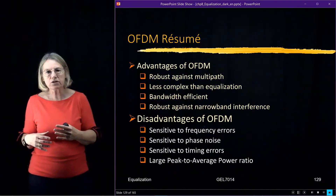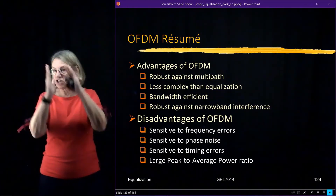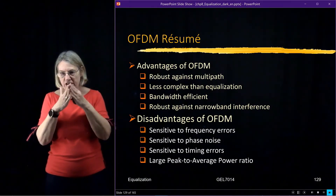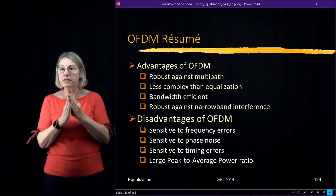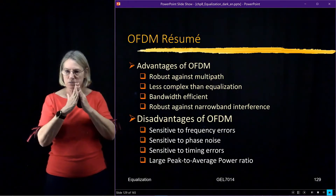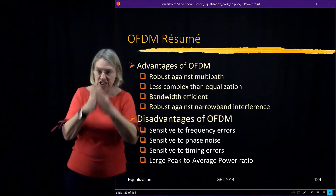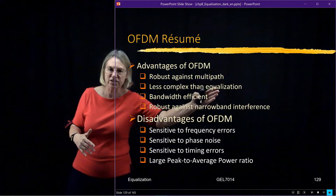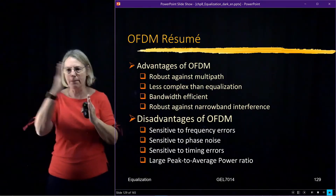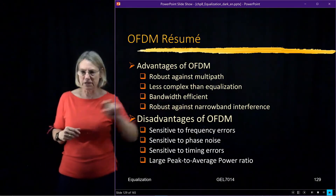OFDM is also robust against narrowband interference. We talked about nulls — a null will induce a problem in one place, but it won't affect the whole transmission because it'll be isolated. Similarly, if there's an actual interfering signal that is narrowband and overlaying the transmission, OFDM will not be troubled as much by that either.